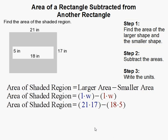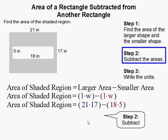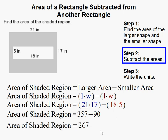So we need to subtract. 21 times 17 is 357. 18 times 5 is 90. That gives me 267.